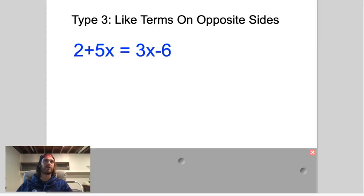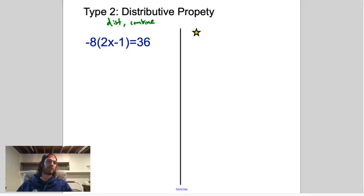The third type is when you have like terms on opposite sides that you need to combine. I have an x here and an x here. We can't just combine because they are separated by the equal sign. So please make sure you know where that equal sign is in the equation and whether or not it's separating them. That's going to make a big difference in your answer.